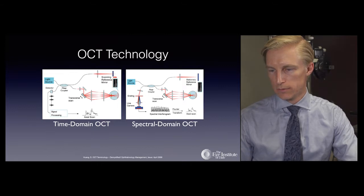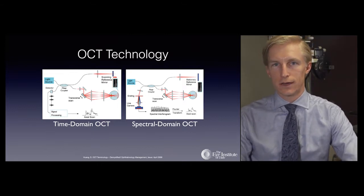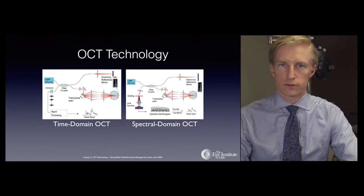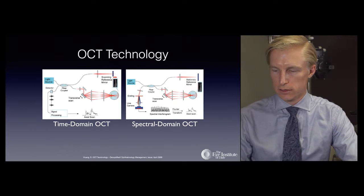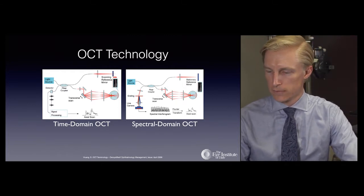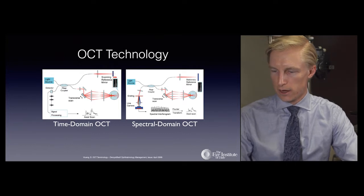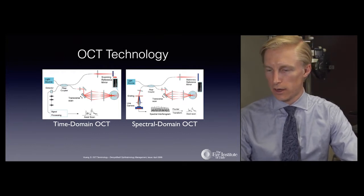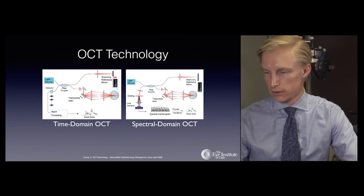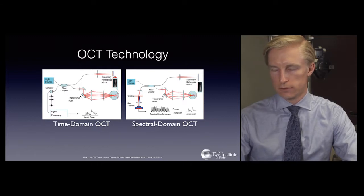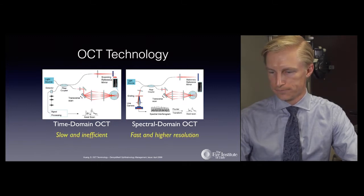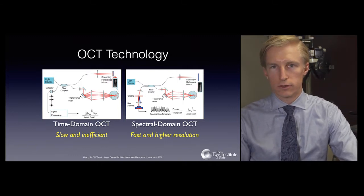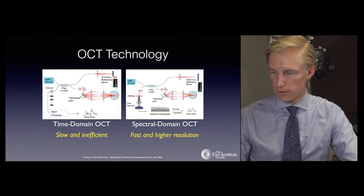The most widely used imaging technology in the United States for quantitative assessment of the optic nerve and retinal nerve fiber layer is optical coherence tomography. There are two main types: time domain OCT, which is the older device, takes longer to acquire scans and has less detail; and spectral domain OCT, which uses a spectral interferogram and Fourier transform to acquire more imaging in less time with greater detail, providing better assessment of RNFL health and change over time.